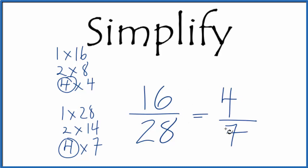These fractions have the same value. If you divided 16 by 28 and 4 by 7 you get the same number. Note that we can't reduce this fraction any further - it's in simplest form.